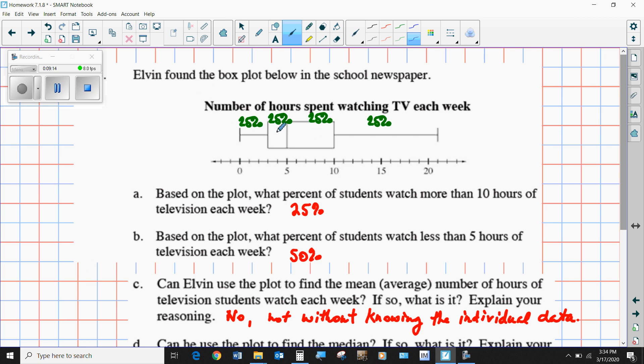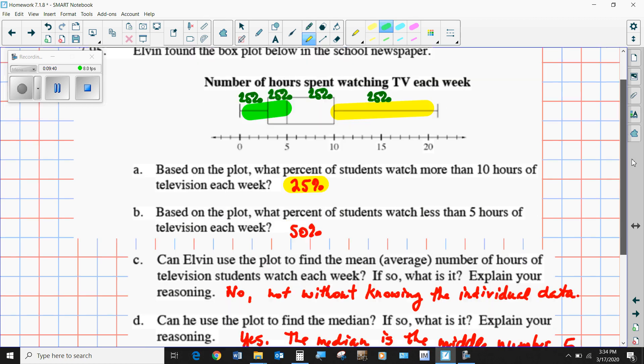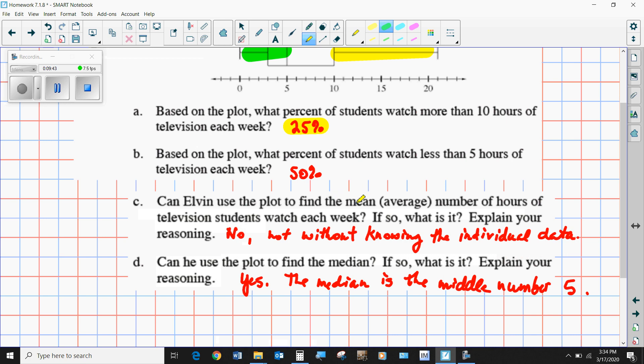Here we've got a box plot. Remember, after plotting everything, you got your minimum and your maximum, your median, and your two quartiles. These four sections represent 25% of the total data. But based on the plot, what percent of the students watch more than 10 hours? That would be this section right there, which is 25%. Based on the plot, what percent of the students watch less than five hours? That would be this grouping right here, which is 50%.